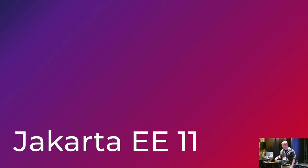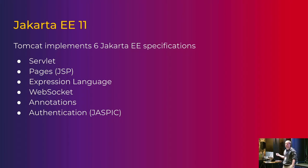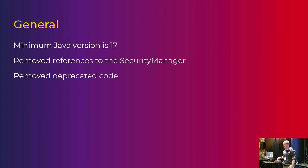Most people think of the four specifications that Tomcat implements: servlet, pages, WebSocket, and expression language. We actually implement six — we also implement the annotations and the authentication specifications. Authentication used to be called JASPIC, the Java Authentication Service Provider Interface for Containers. So the rename is very much appreciated because I don't have to remember that acronym anymore.